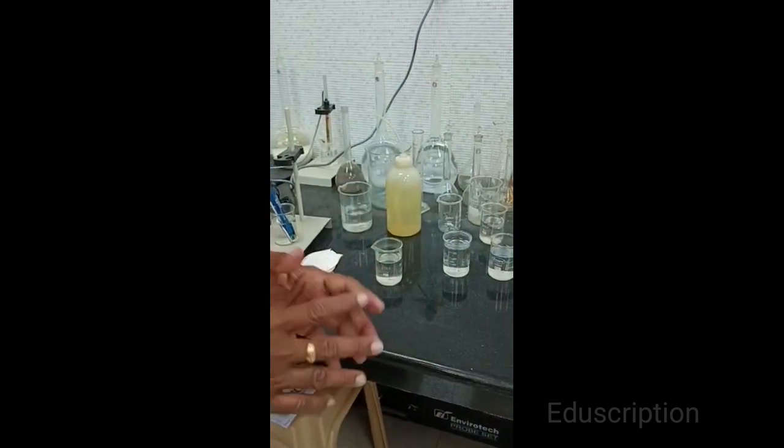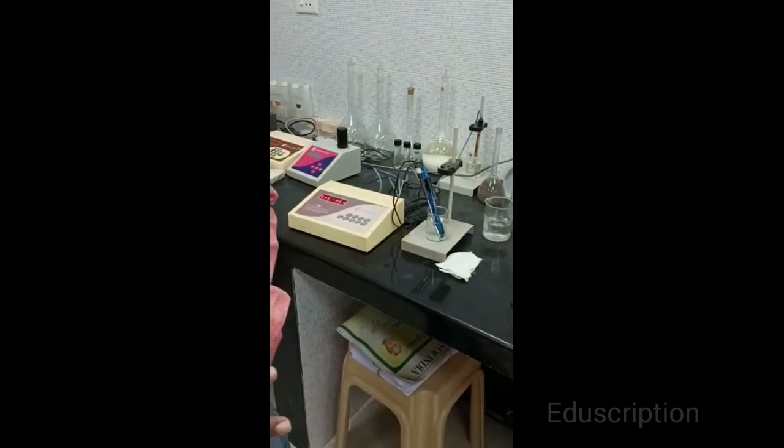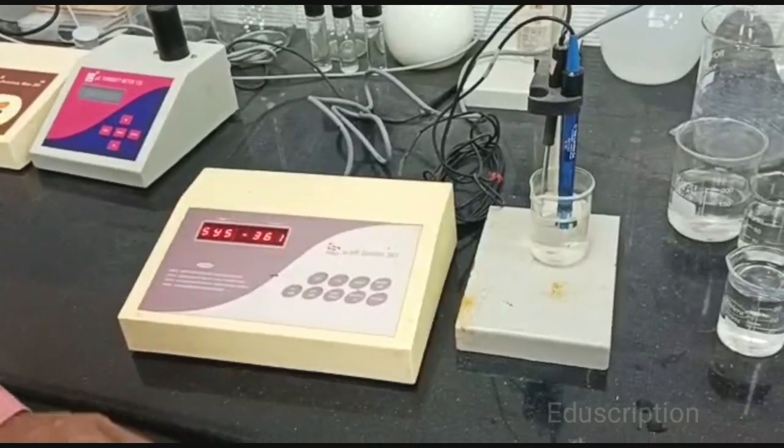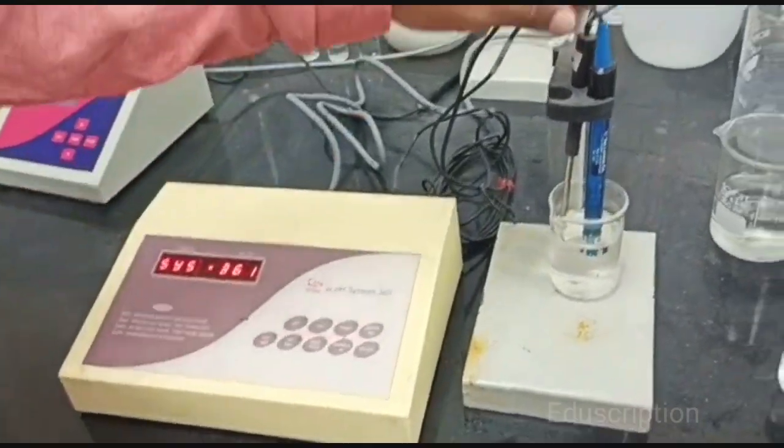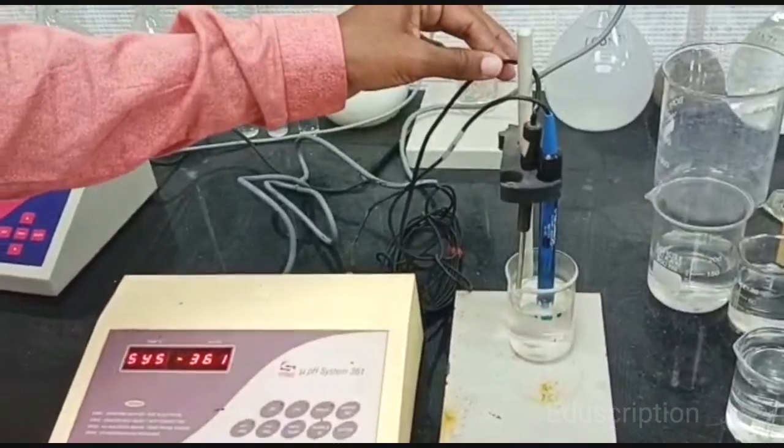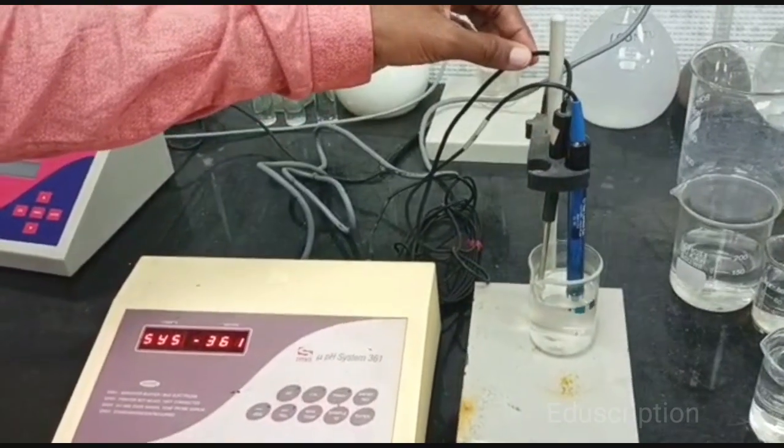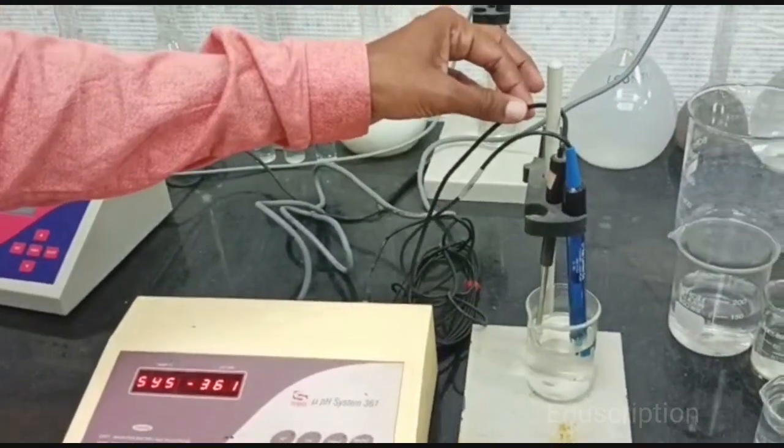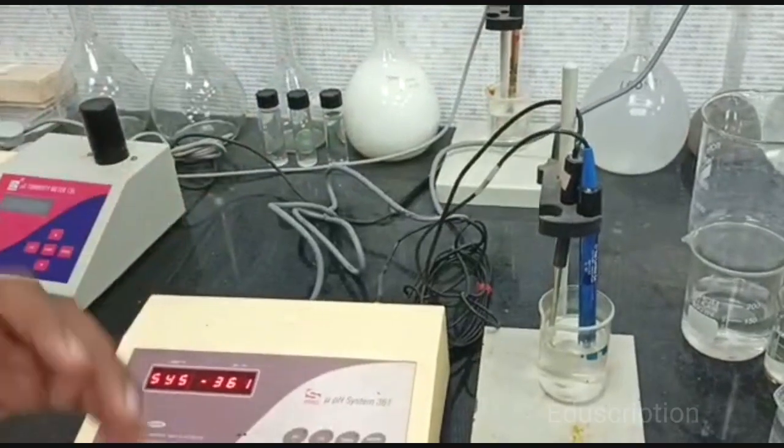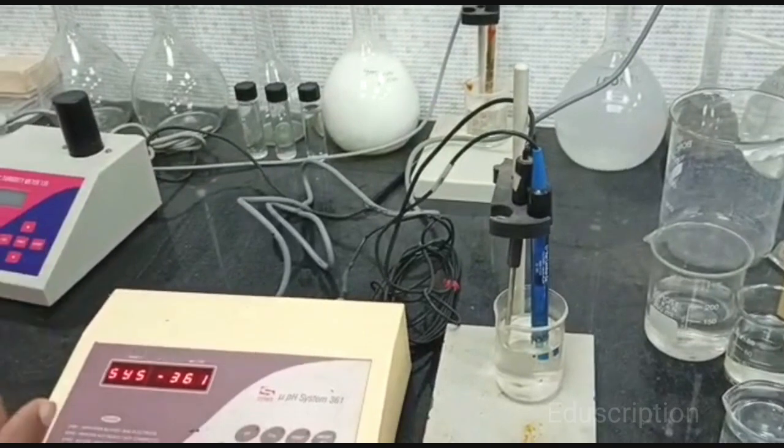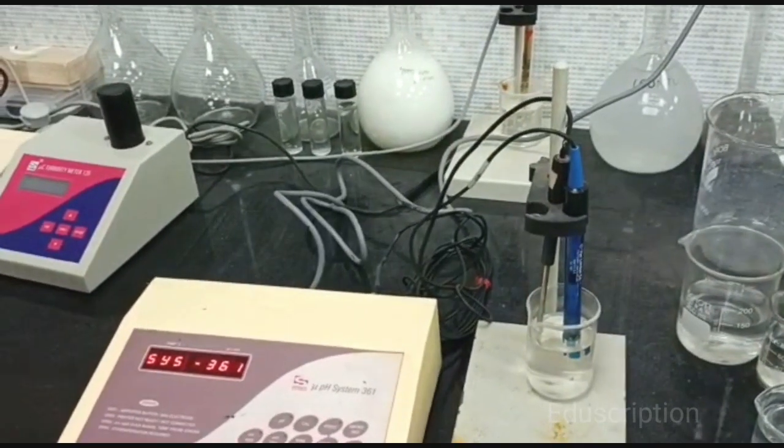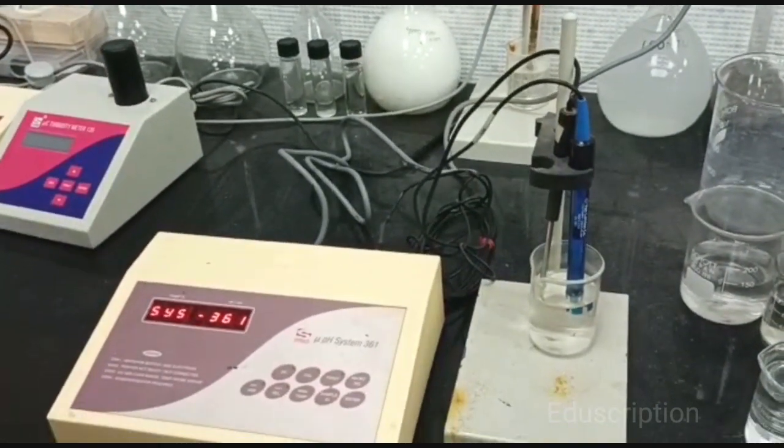This is colorimetric method. It will show or match the color only. But in electronic method we can detect the exact value. See, this is pH meter, this is electrode, this is ATC rod. ATC rod means automatic temperature control rod. While we are detecting the pH value, if you set this rod it will show the temperature also.